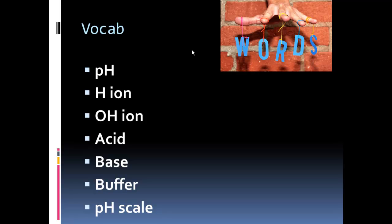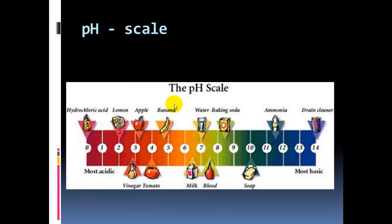So pH, hydrogen ion, and we could also write it as a H with a plus, hydroxide ion, we should know that name, acid, what is an acid, what makes an acid up, what is a base, a buffer, and then what is the pH scale. And that's where we're going to start. So let's look at this scale.